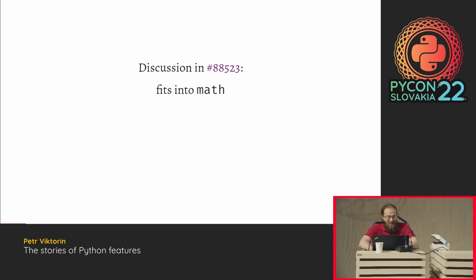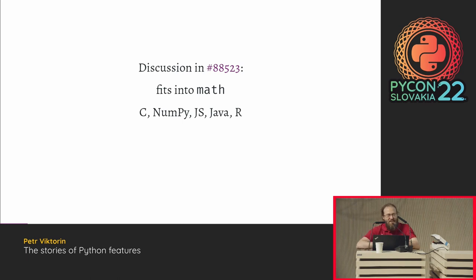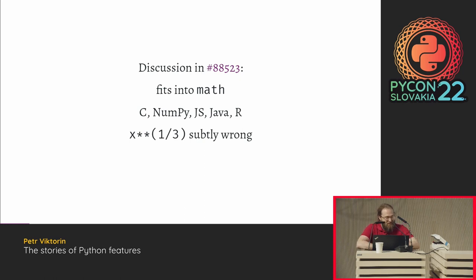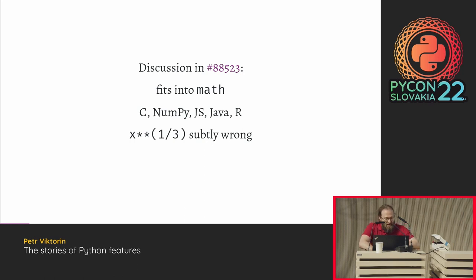So why did we have one and not the other? The function exists not only in C, but also in NumPy, JavaScript, Java, and R. It has the same name everywhere, so why not in Python? There is a very easy alternative — raising a number to the one-third — but this is subtly wrong for negative numbers. Cube root has two roots and this will give you the complex number, which you probably don't want. So CBRT is better.